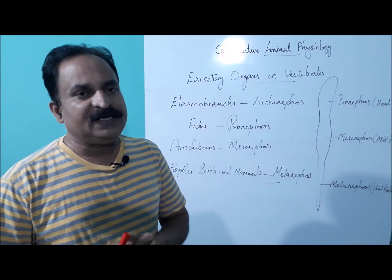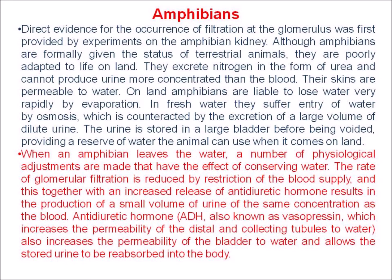Direct evidence of the occurrence of filtration at the glomerulus was first provided by experiments on the amphibian kidney. Although amphibians are formally given the status of terrestrial animal, they are poorly adapted to life on land. They excrete nitrogen in the form of urea and cannot produce urine more concentrated than the blood. Their skins are permeable to water. On land, amphibians are liable to lose water very rapidly by evaporation. In freshwater, they suffer entry of water by osmosis, which is counteracted by excretion of a large volume of dilute urine. The urine is stored in a large bladder before being voided, providing a reserve of water the animal can use when it comes on land.